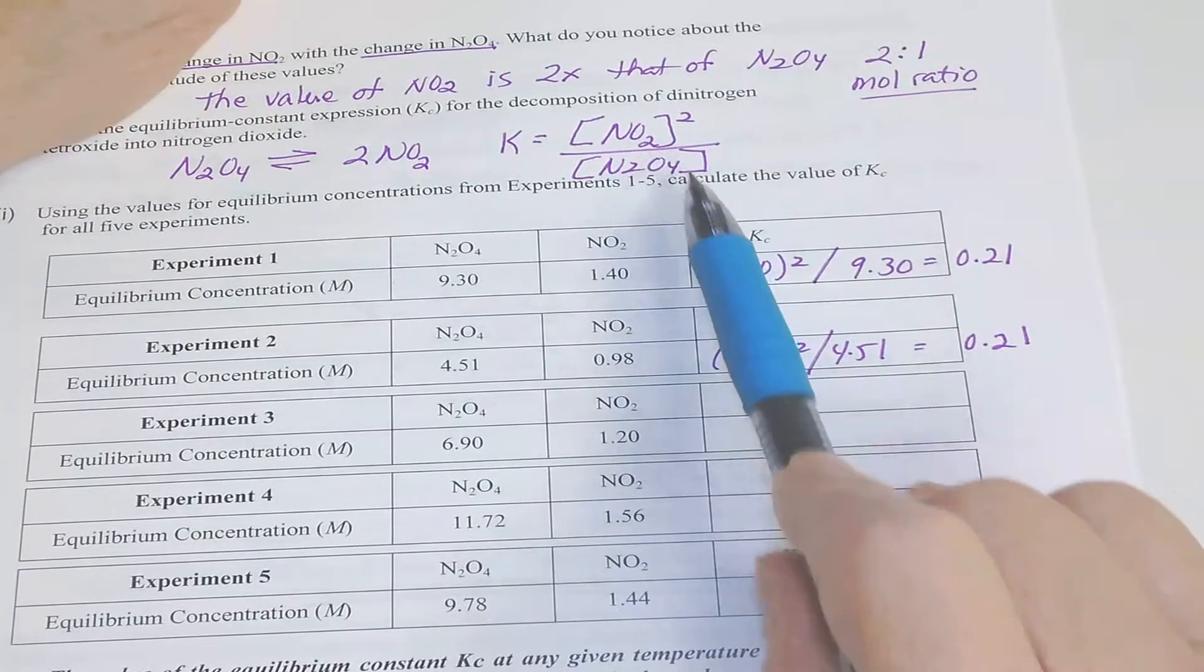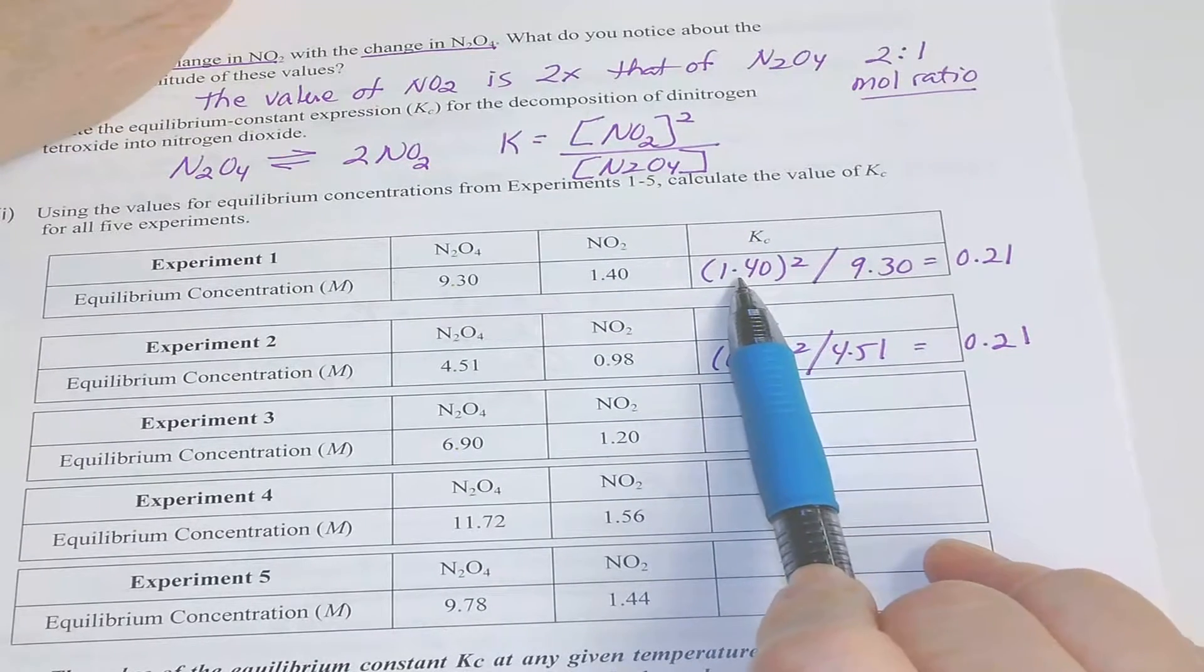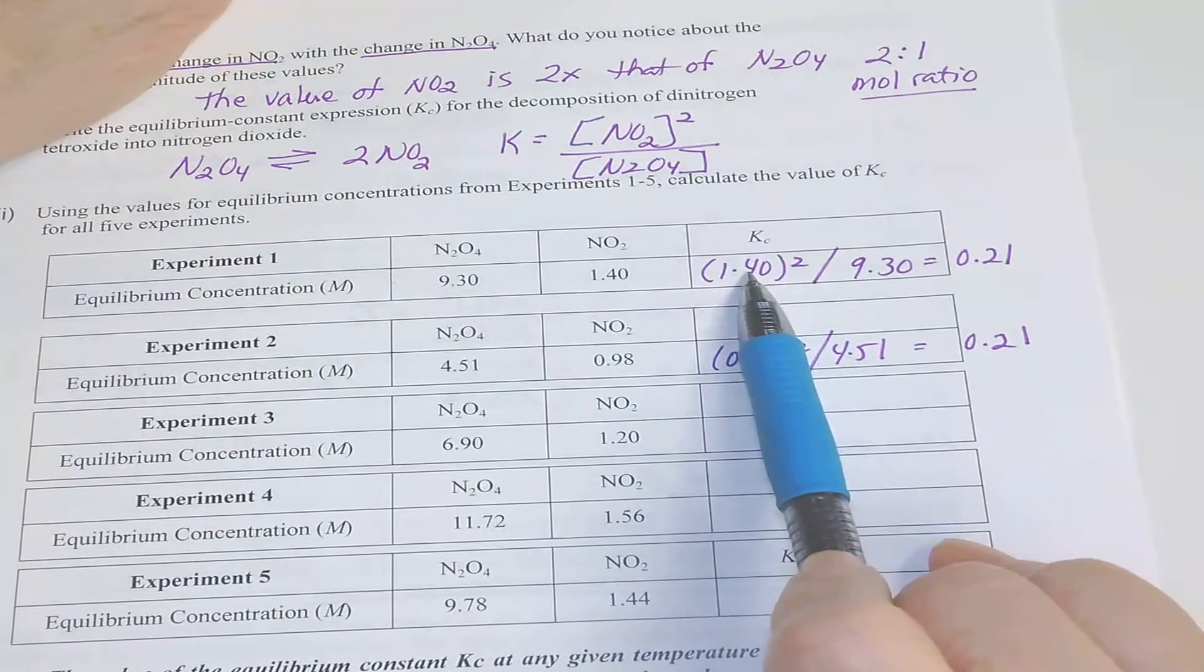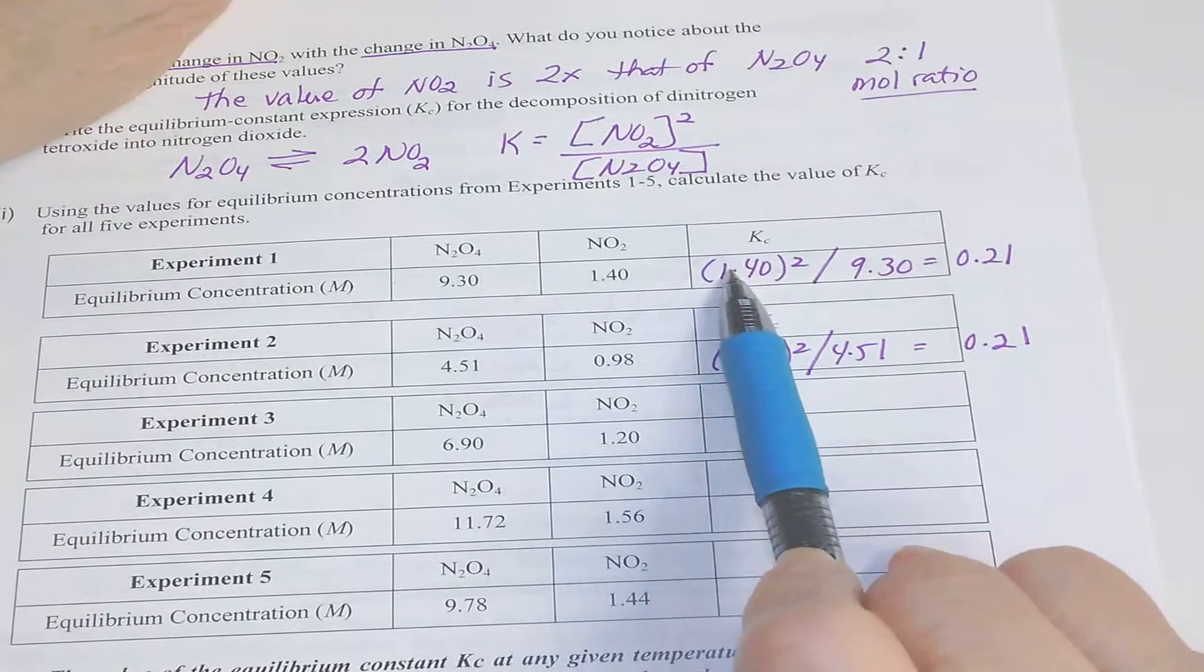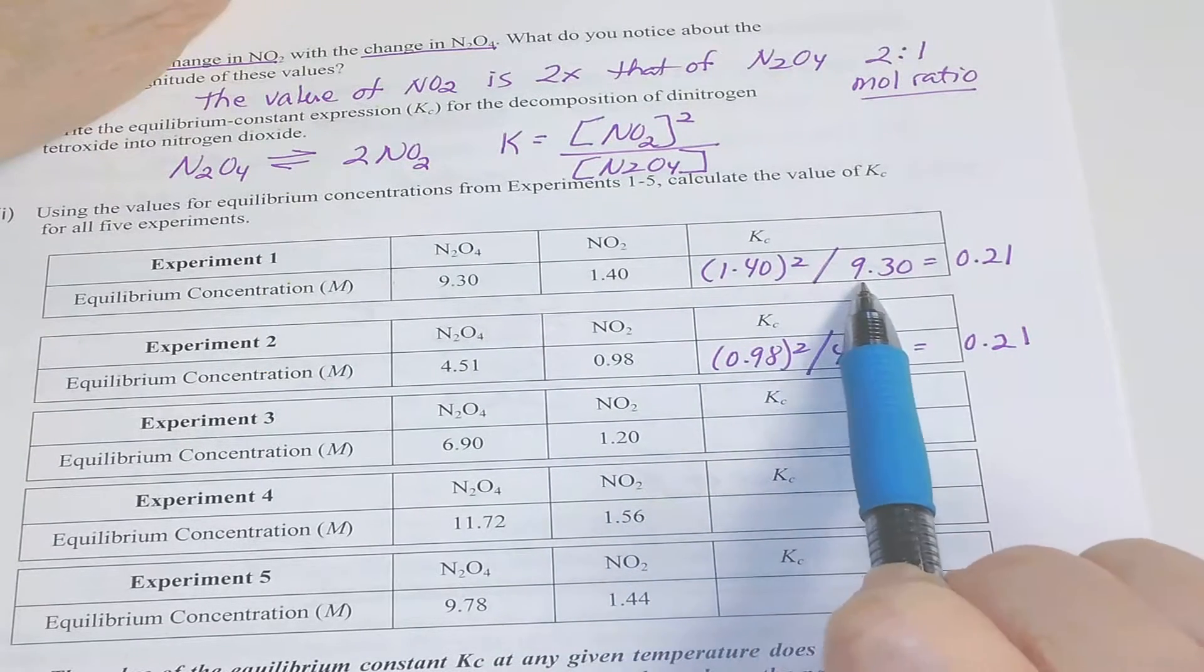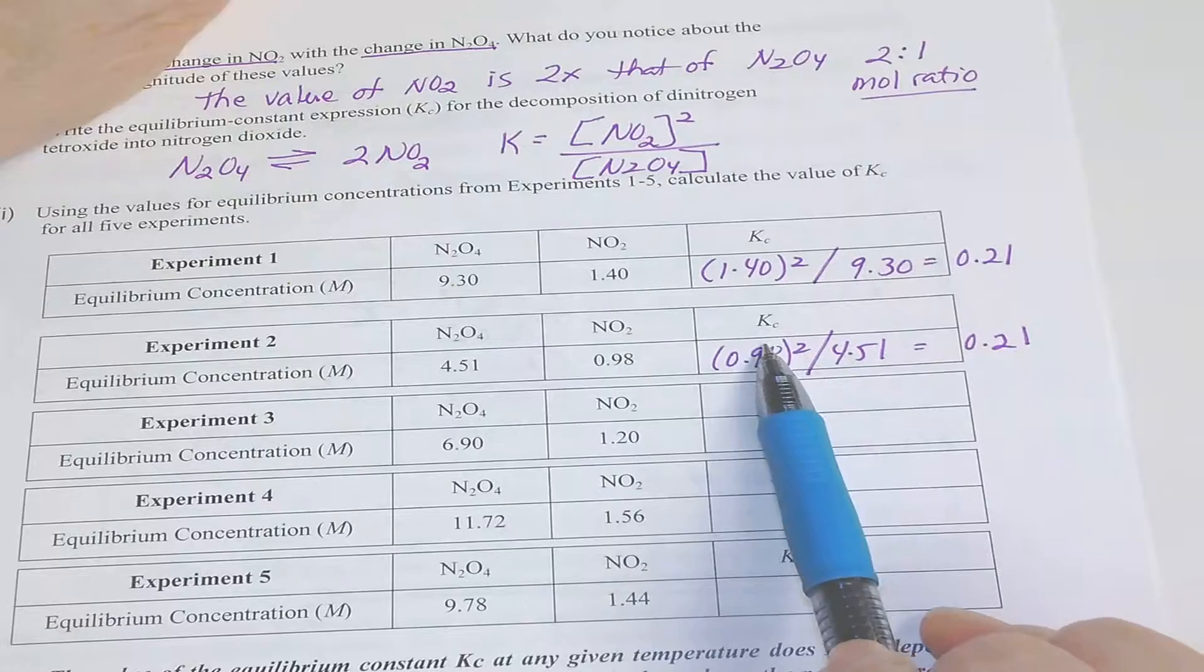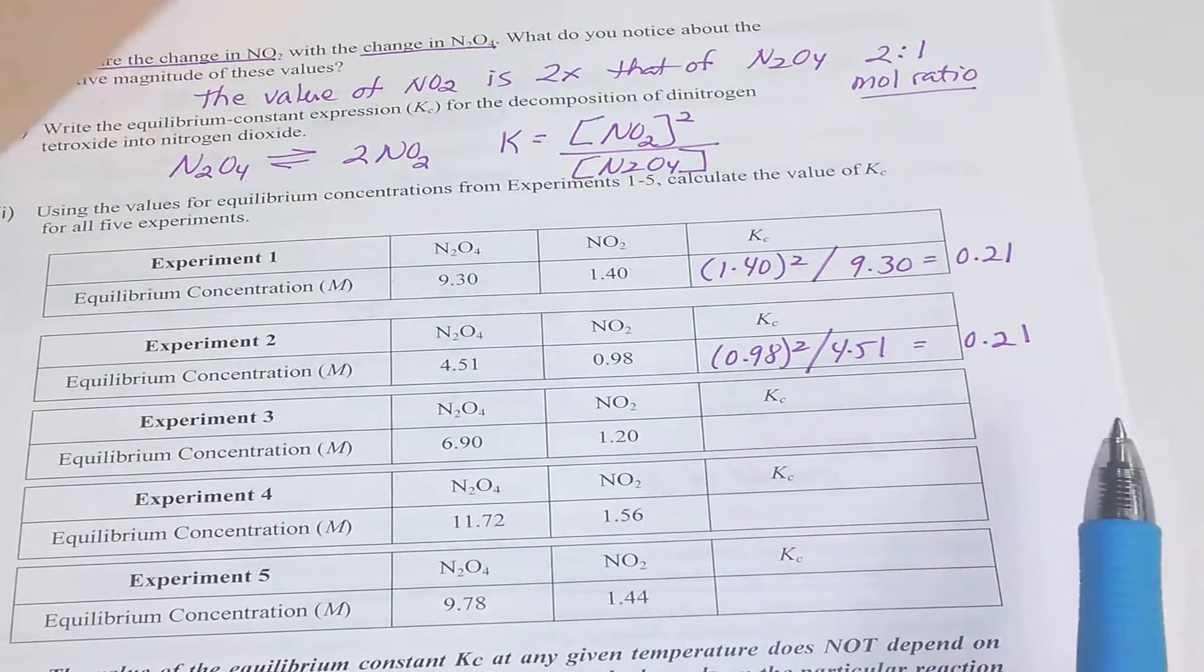If you put those in and follow the equilibrium expression, you will take your 1.40, square it and divide it by 9.30. Do this for all of them down the line.